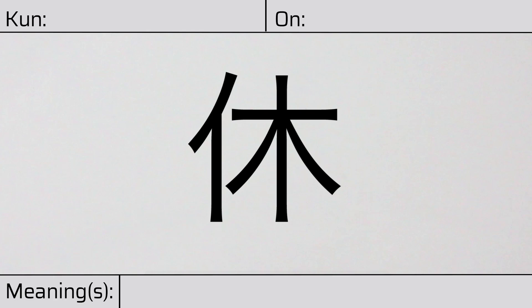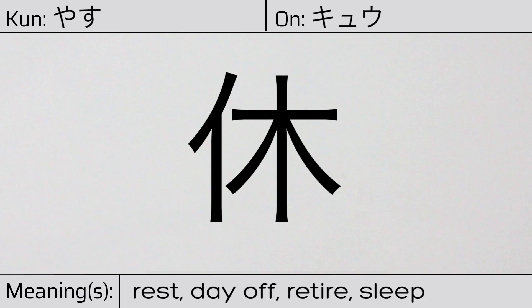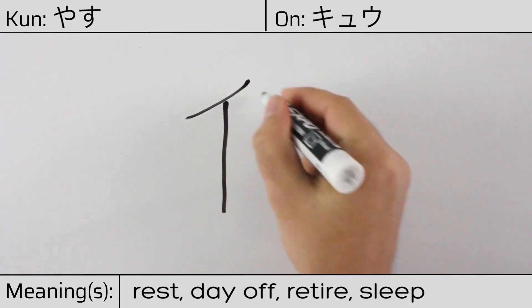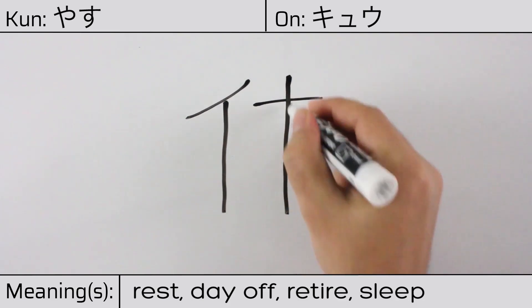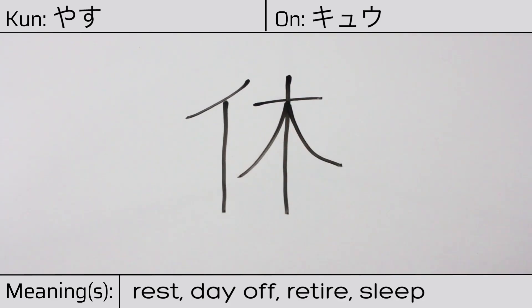Welcome to this lesson on Japanese kanji. Today, we'll be discussing this character. This kanji has kunyomi or Japanese reading of yasu, and it has an onyomi or Chinese reading of kyu. This character has the meanings rest, day off, retire, or sleep. Here is the stroke order.